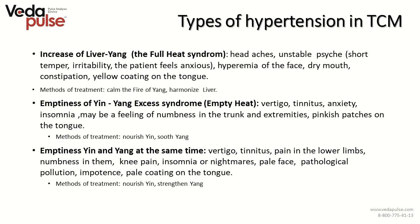Types of hypertension in traditional Chinese medicine: the first is increase of Yang of liver — the full heat syndrome — which causes headaches, unstable psyche, short temper, irritability, anxiety, hyperemia of the face, dry mouth, constipation, and yellow coating of the tongue. Methods of treatment include calming the fire of Yang and harmonizing the liver. Another type is emptiness of Yin-Yang axis syndrome or empty heat, which can cause vertigo, tinnitus, anxiety, insomnia, numbness in the trunk and extremities, and pinkish patches on the tongue. Treatment here is to nourish Yin and soothe Yang.